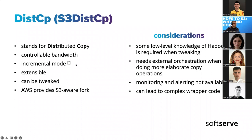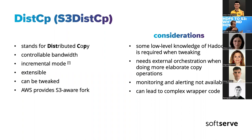Even in the official documentation, they say that for object storages like S3, there could be potential problems with the incremental mode sometimes. But there is an option to do incremental copies. It's extensible — you can add custom filter implementations on the classpath and it will pick them up. You can use different implementations for listing files. So you can extend the distributed copy to use some specifics of your cluster environment.